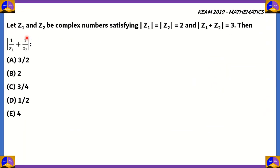The first question: Let z1 and z2 be complex numbers satisfying the conditions mod of z1 equals mod of z2 equals 2, and mod of z1 plus z2 equals 3. Then, we need to find out the value of the modulus of 1 by z1 plus 1 by z2. How do we solve this question?